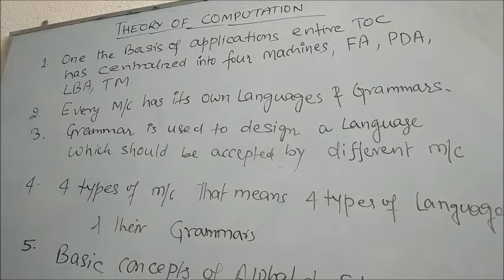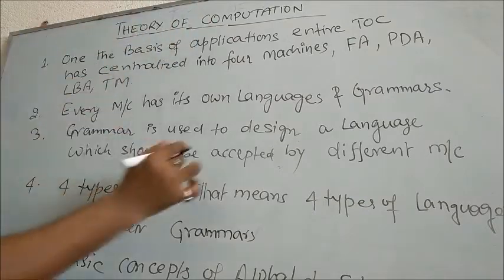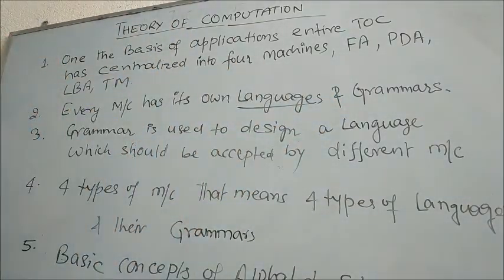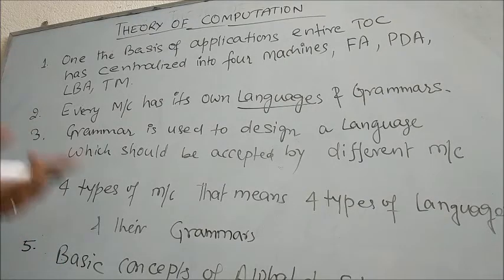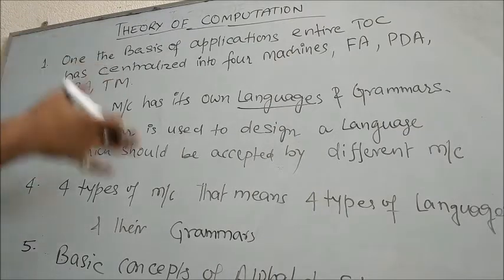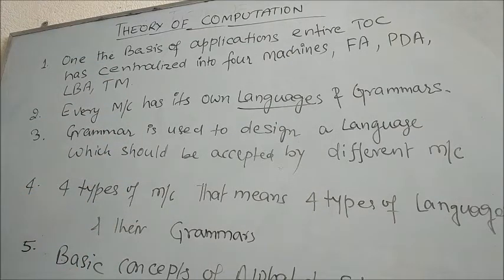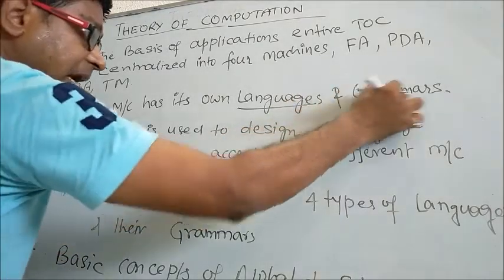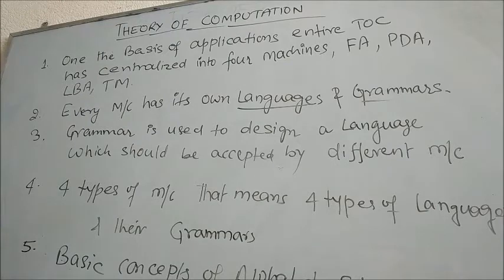If the language is correct, it should be accepted; otherwise it should be rejected. For this reason, in TOC we also have to study about languages — what languages are, what Finite Automata and Push-Down Automata are, which I will cover in later sections. Next, grammar is important: on the basis of grammar, you can design languages which should be accepted by different machines.